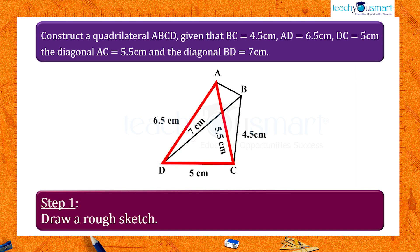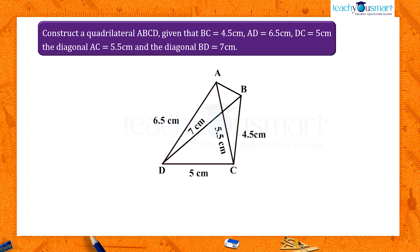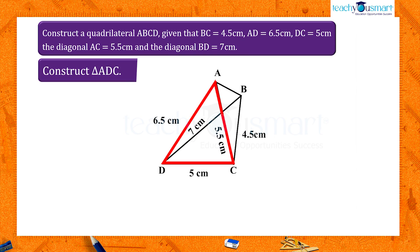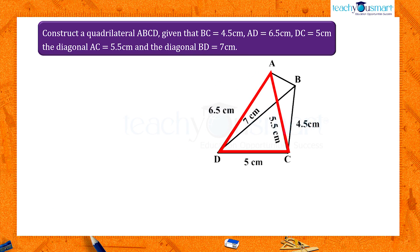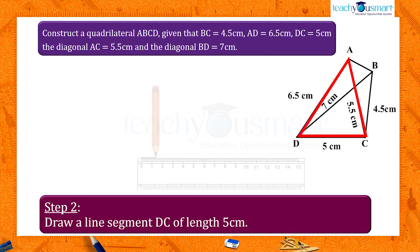First we construct two triangles using the given measurements. For that, let us construct a triangle ADC. For this, draw a line segment DC of length 5 centimeters.